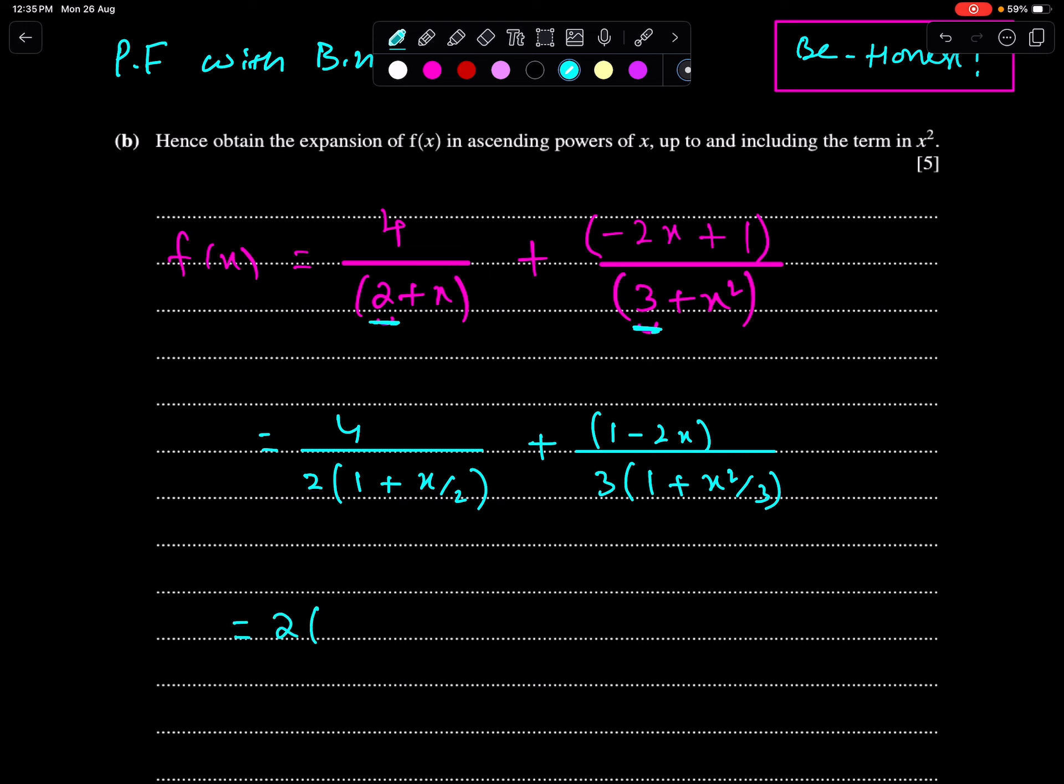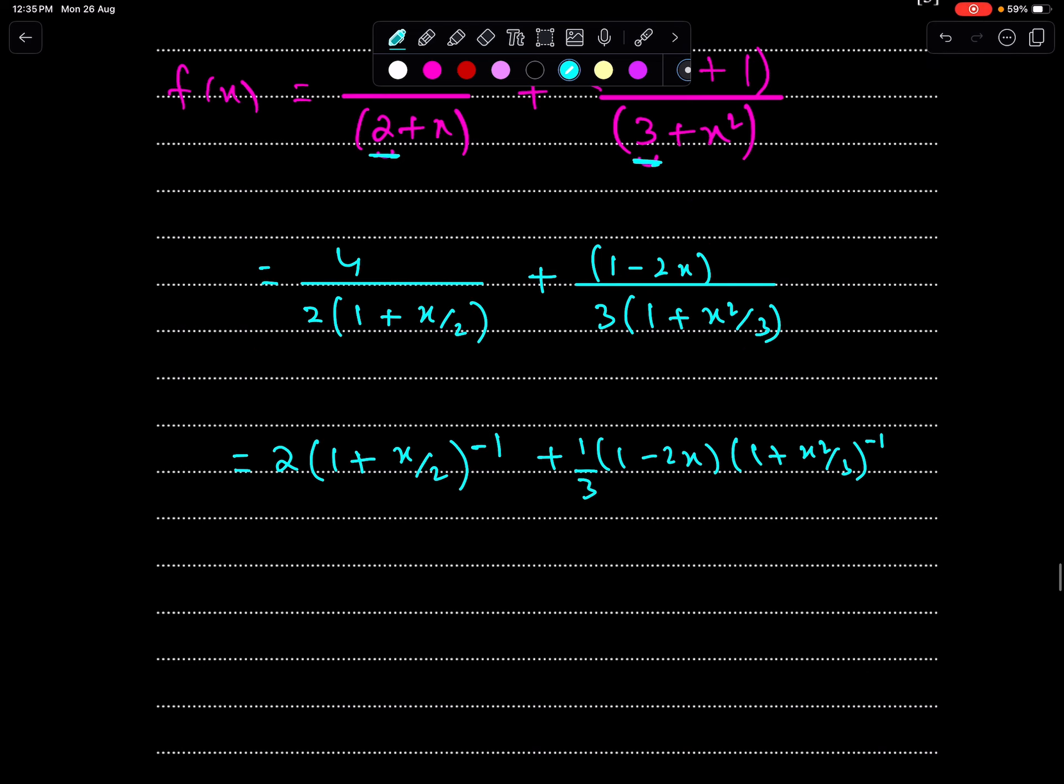So, we have 2, 1 plus x upon 2 whole power minus 1, 1 minus 2x, 1 upon 3, 1 plus x square upon 3 whole power minus 1. Now, we will expand these two expansions with the two important expressions of binomial of power minus 1.